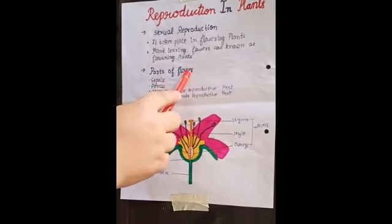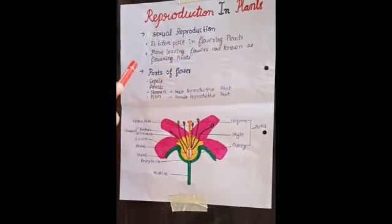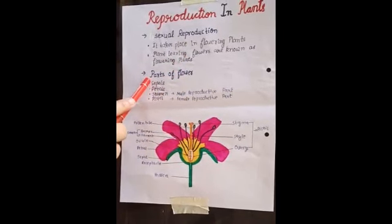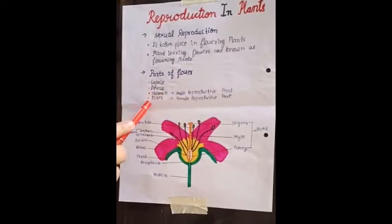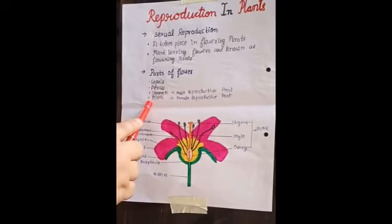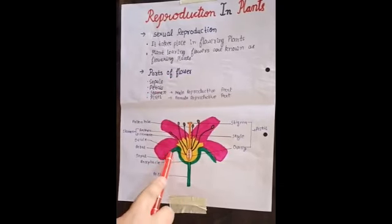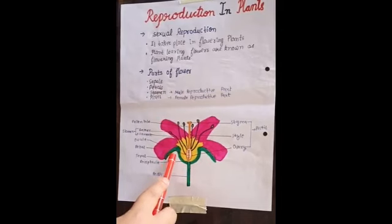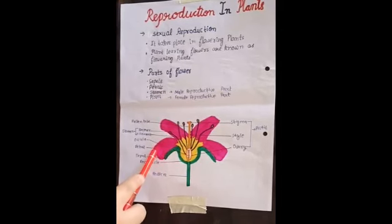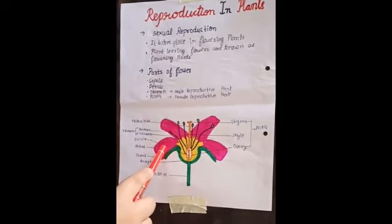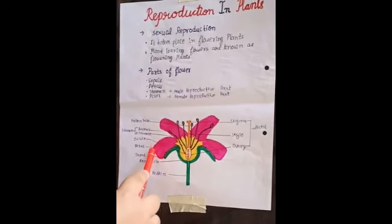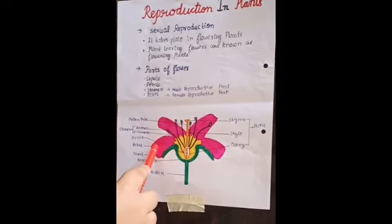Now, parts of a flower. Flowers have four parts: sepal, petal, stamen, and pistil. This green colored portion — the green leaves — is called sepal, and these are petals. Most flowers have colored petals to attract insects for pollination.